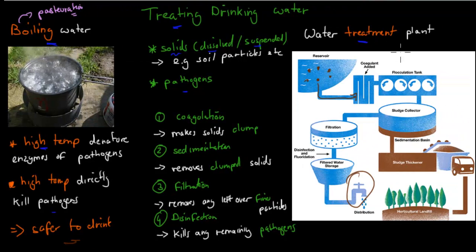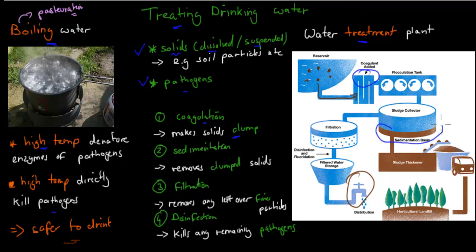The other way is water treatment plants, which have basically four stages to remove the vast majority of solids and pathogens. The first stage is coagulation — a coagulant is added to the water, which makes all the solids clump together. Then the next stage is sedimentation — those clumped solids drop to the bottom of the tank and are removed. So the first two stages remove most solids. Filtration is the next stage, using fine filters to remove any leftover fine particles. And the last stage is disinfection — chlorine is added to kill any remaining pathogens. By these four steps, most solids and pathogens are removed, and the water is clean to drink.